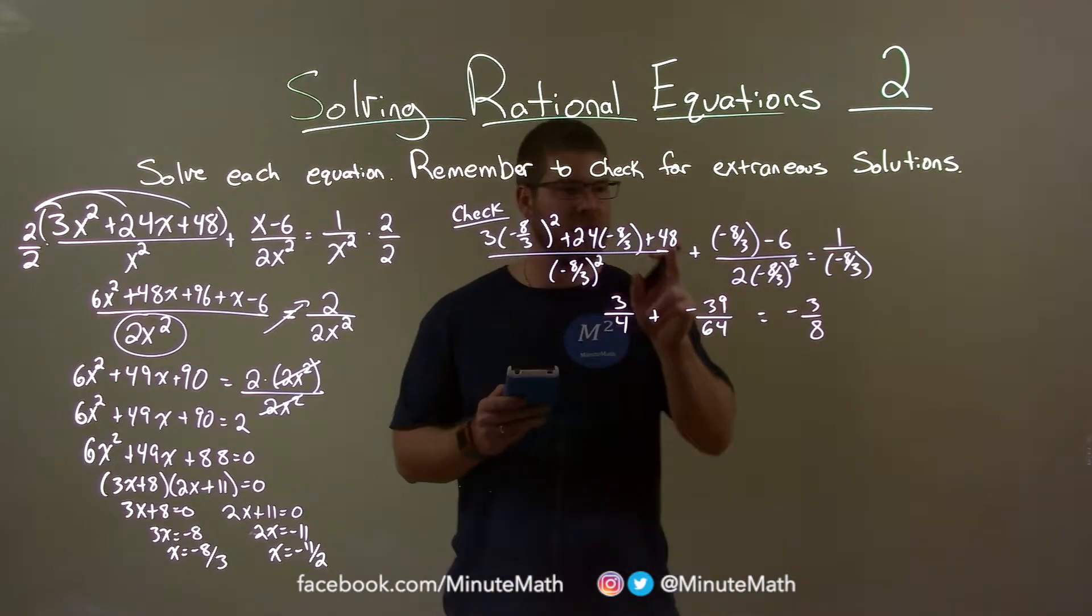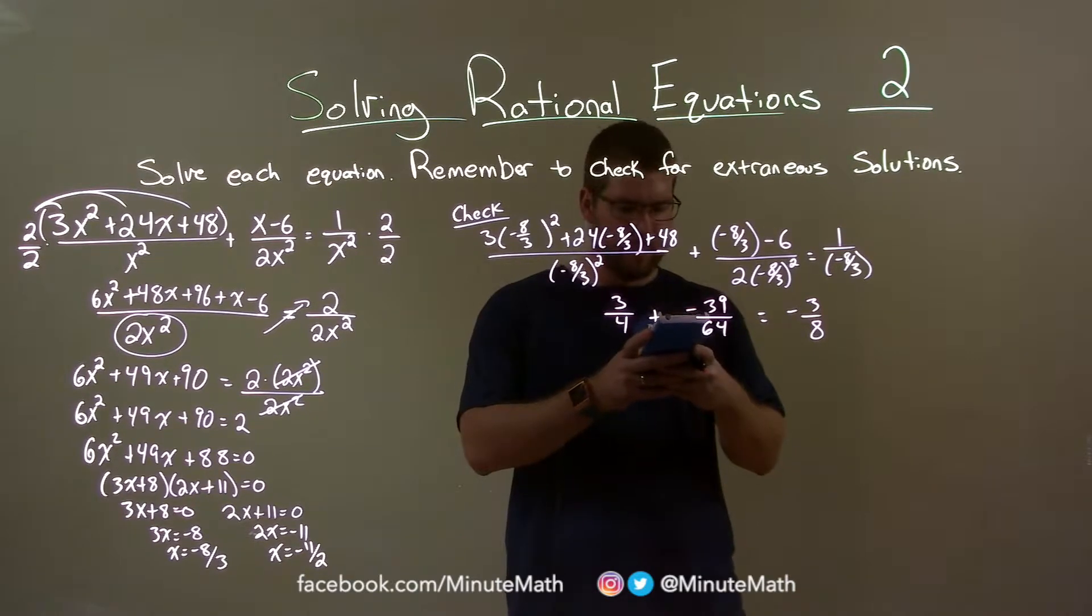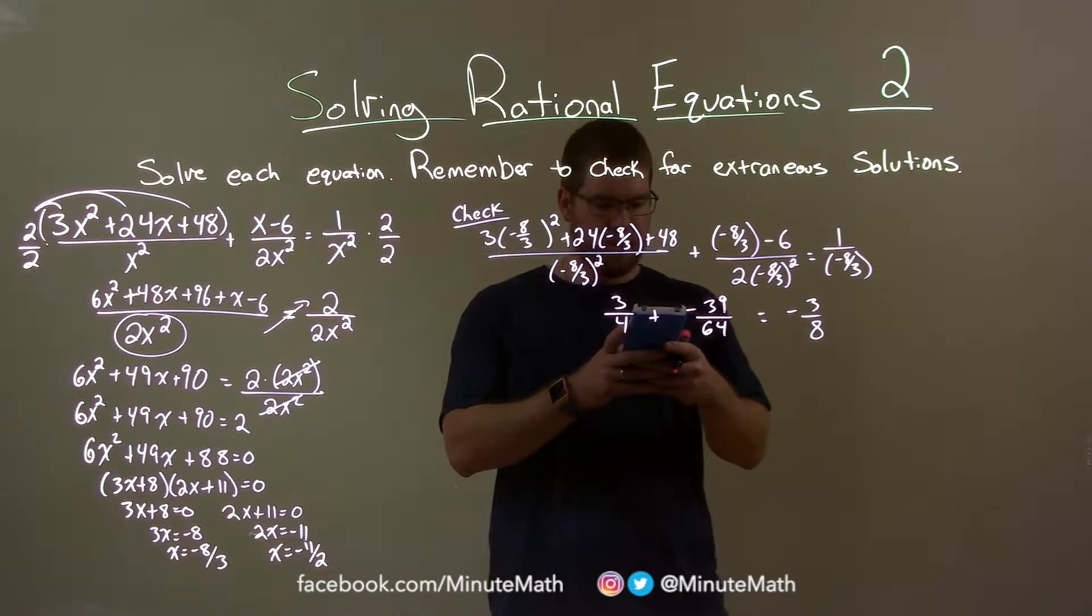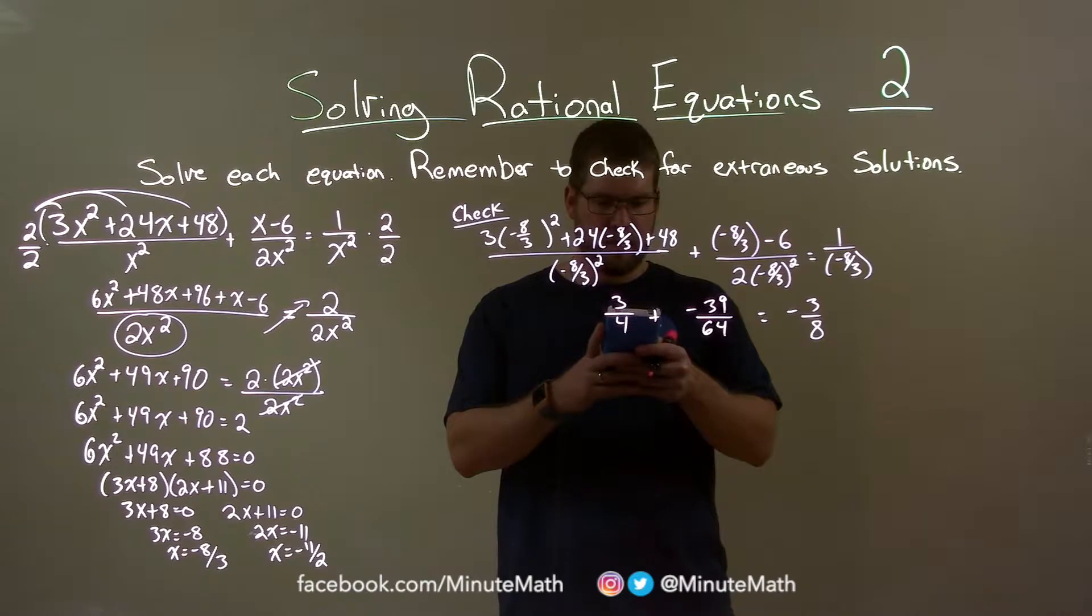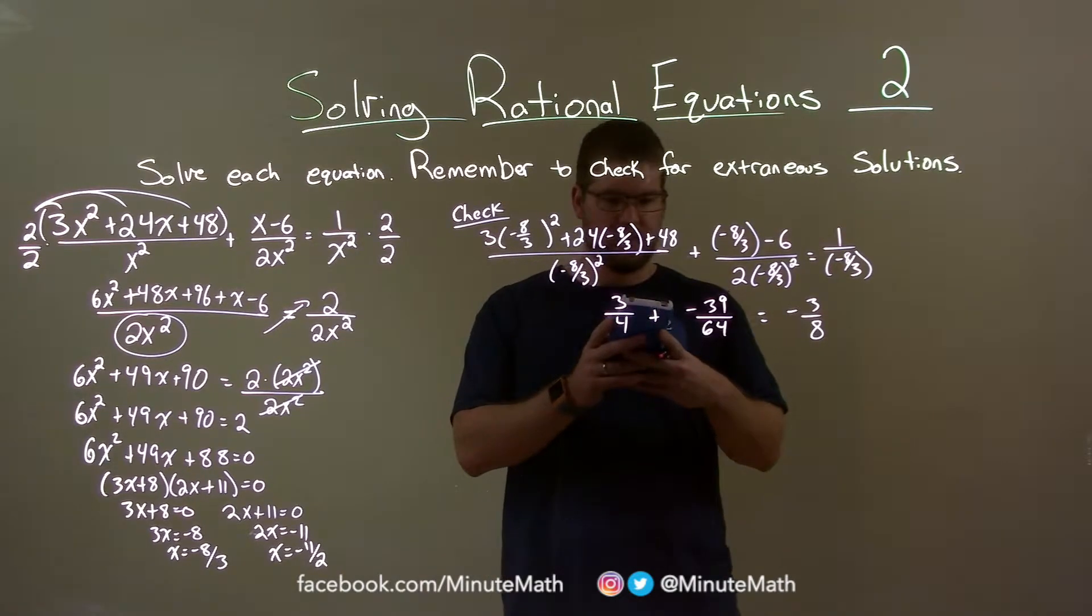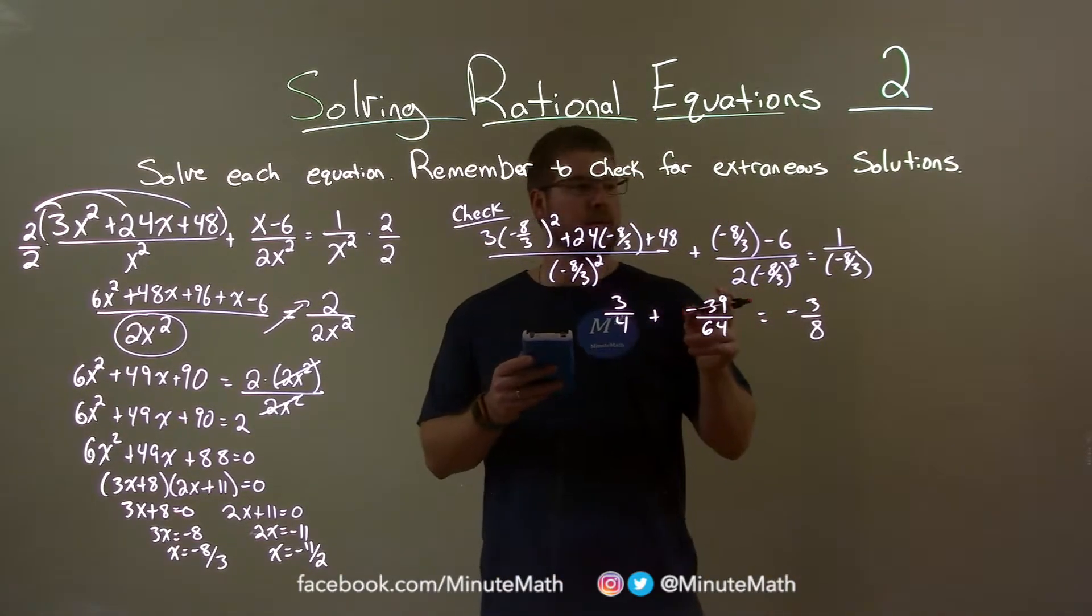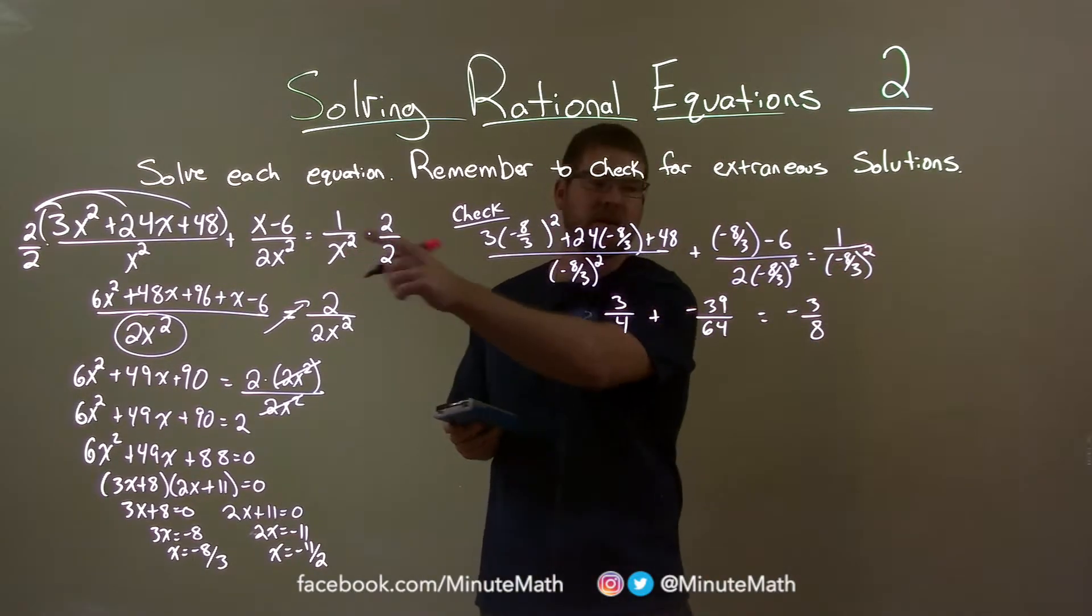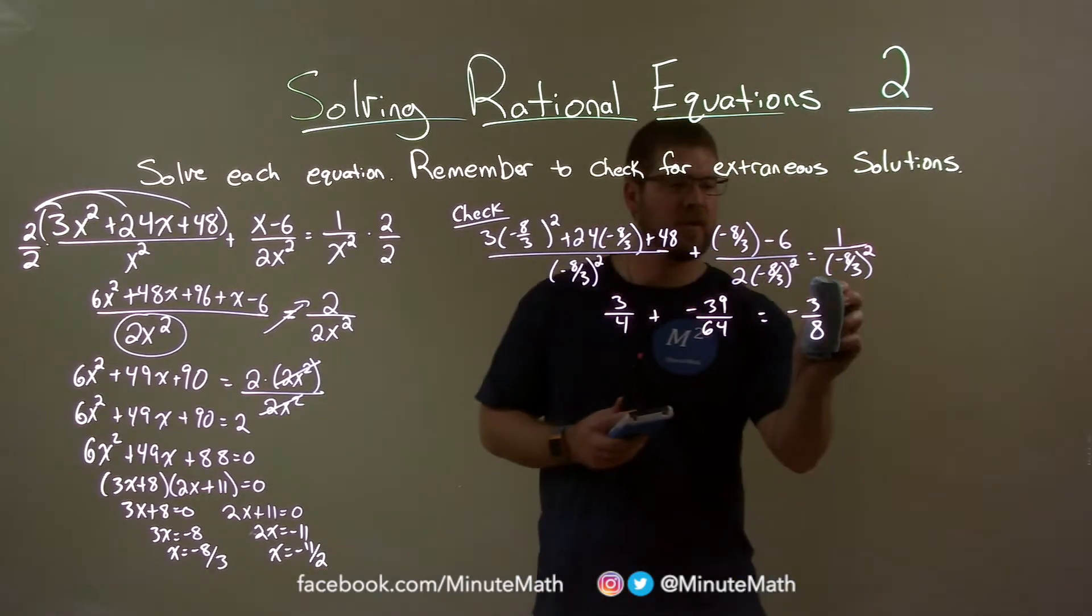Add these two fractions: 3 fourths plus negative 39 divided by 64. And I got something slightly off. I got 9/64. So I'm actually going to double check my work here. Something might have been off. I think it's this one. So it's always good to double check when this doesn't happen first. I don't assume you always got it wrong.